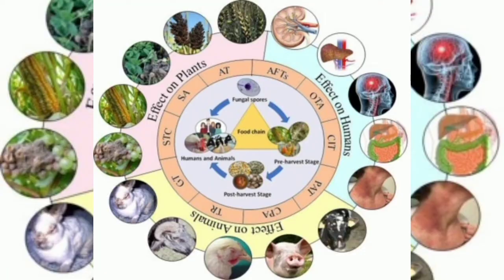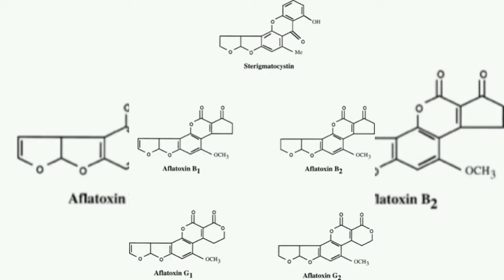Aflatoxins are various poisonous carcinogens and mutagens that are produced by contaminant molds, particularly Aspergillus species. Aflatoxin B1 is considered the most toxic and is produced by both Aspergillus flavus and Aspergillus parasiticus.